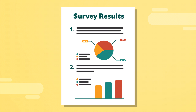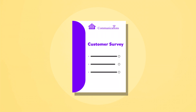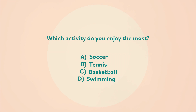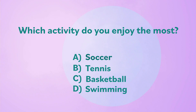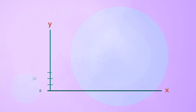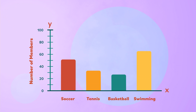If you make your own survey, remember that it's often easier to make graphs using data from closed-ended questions. For example, a sports club sent out a survey to its members, asking them which activity they enjoy the most. The participants can choose soccer, tennis, basketball, or swimming. After getting the survey results, the data is presented in a bar chart.